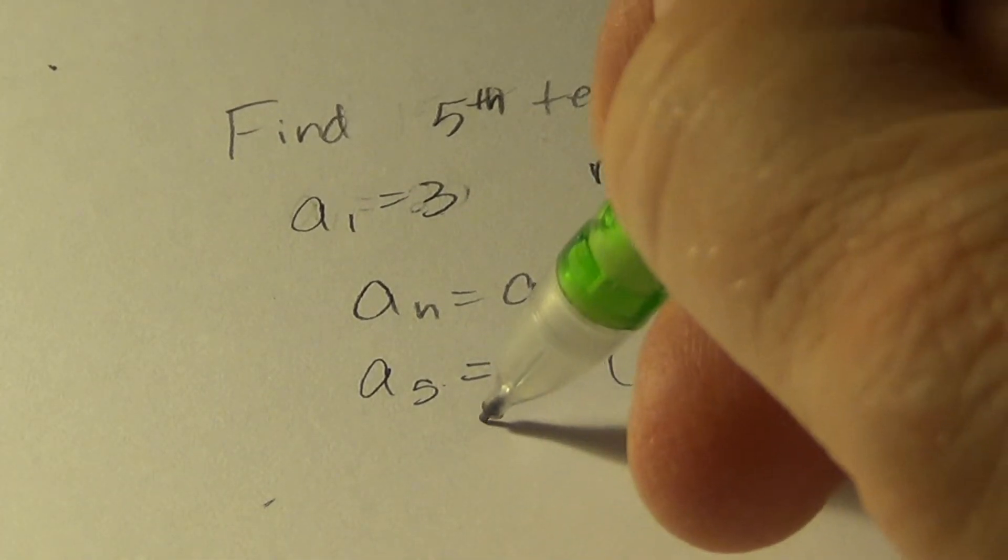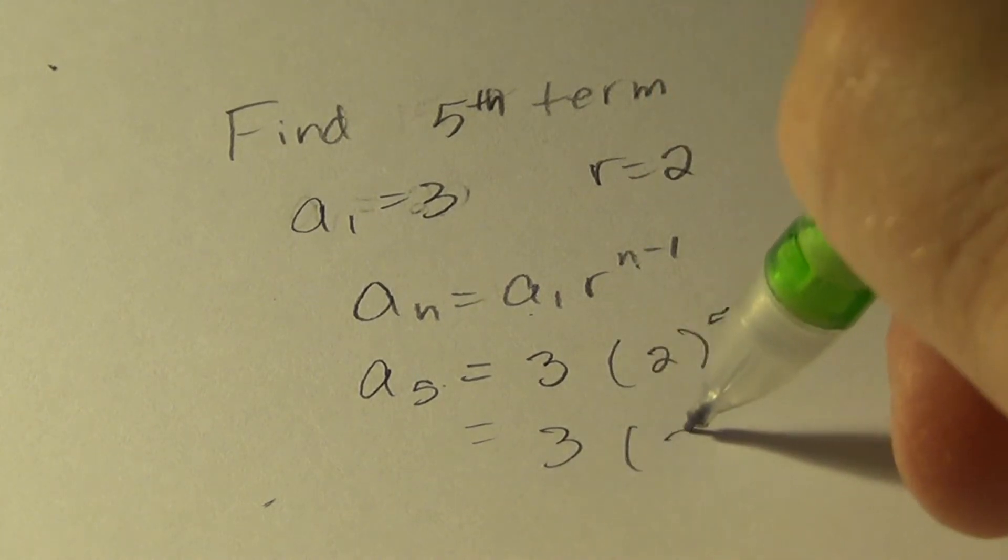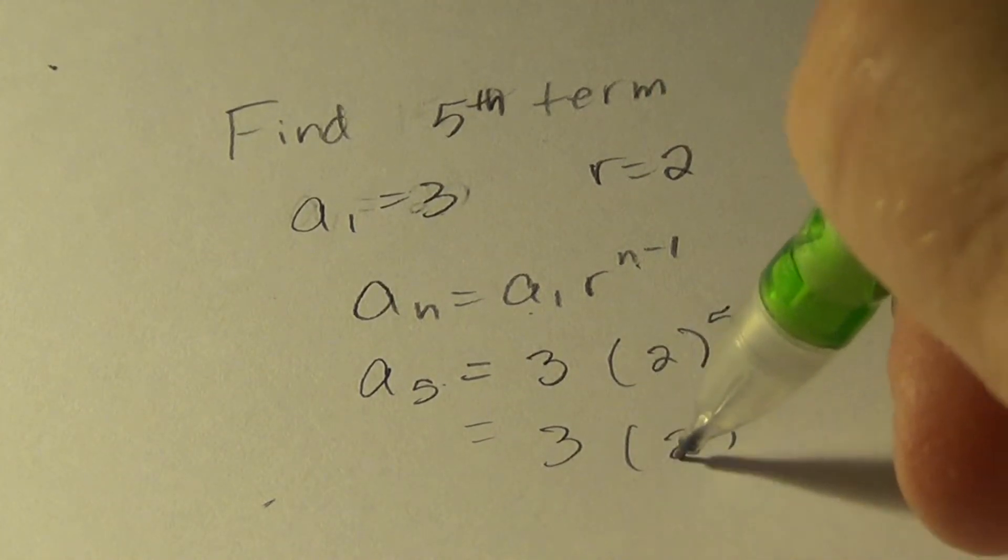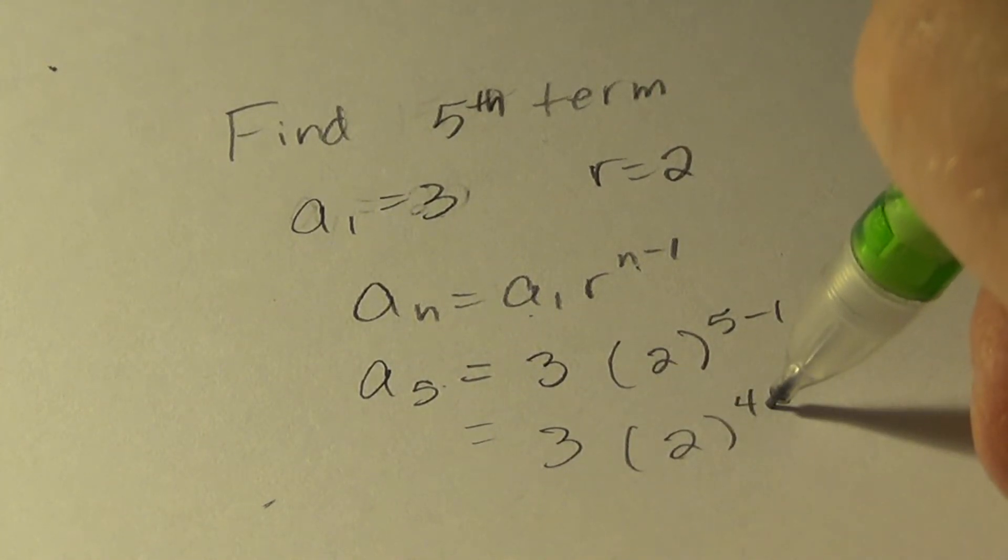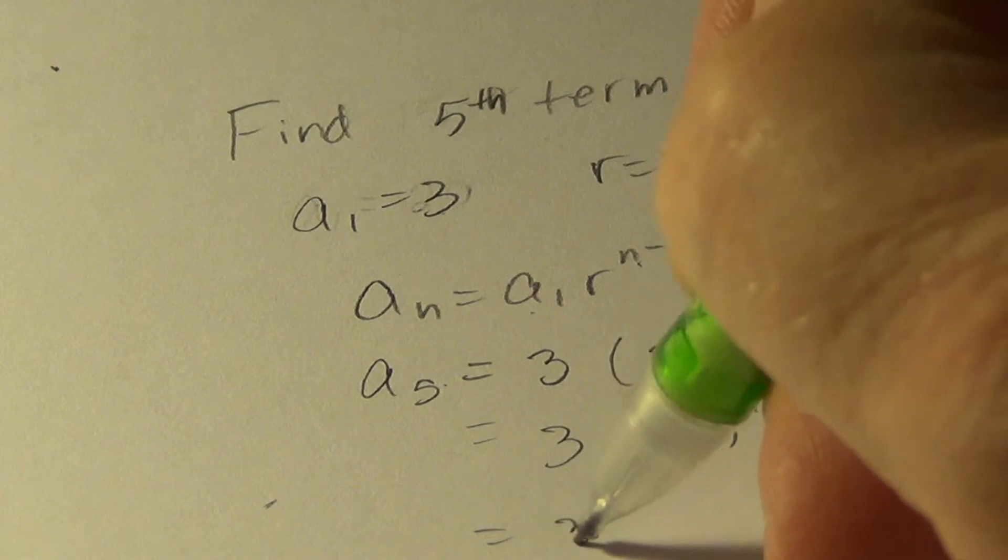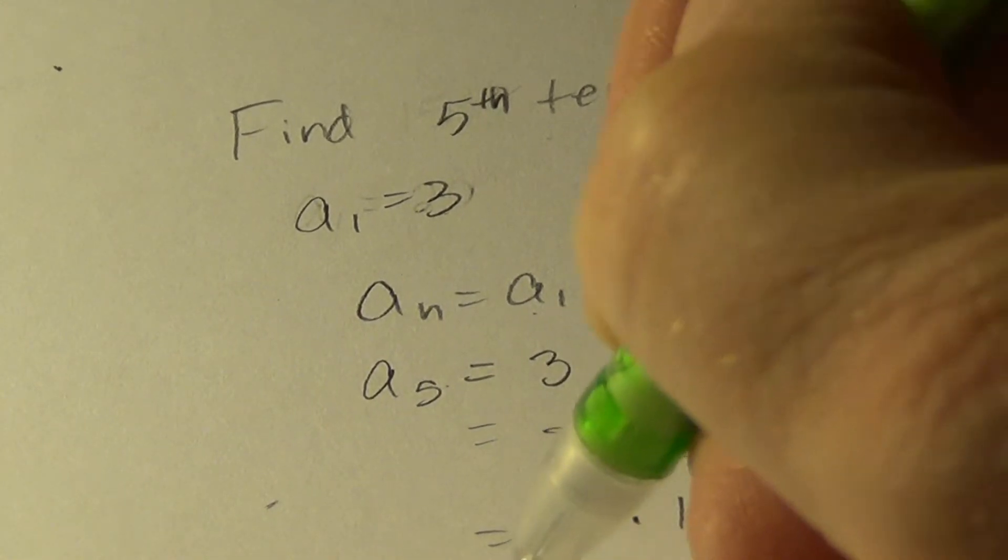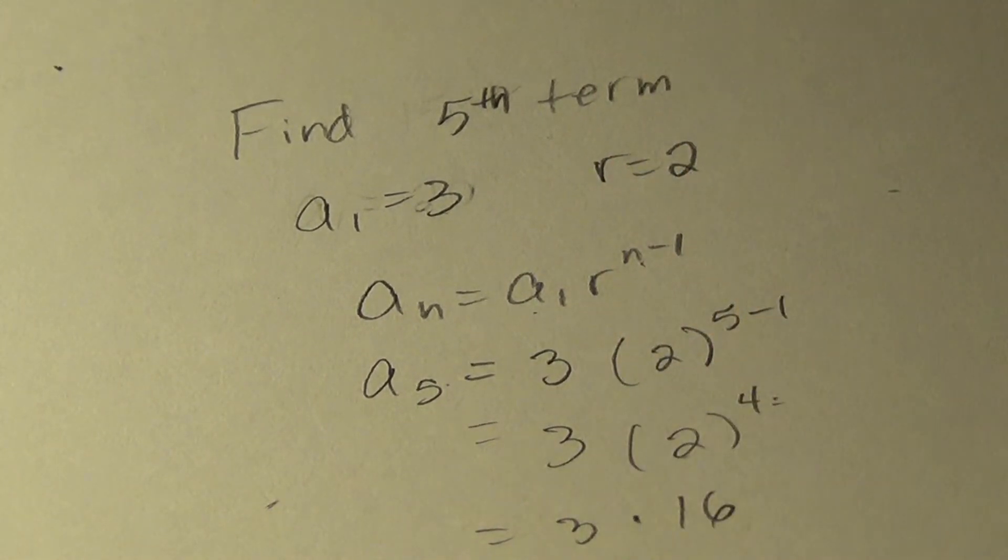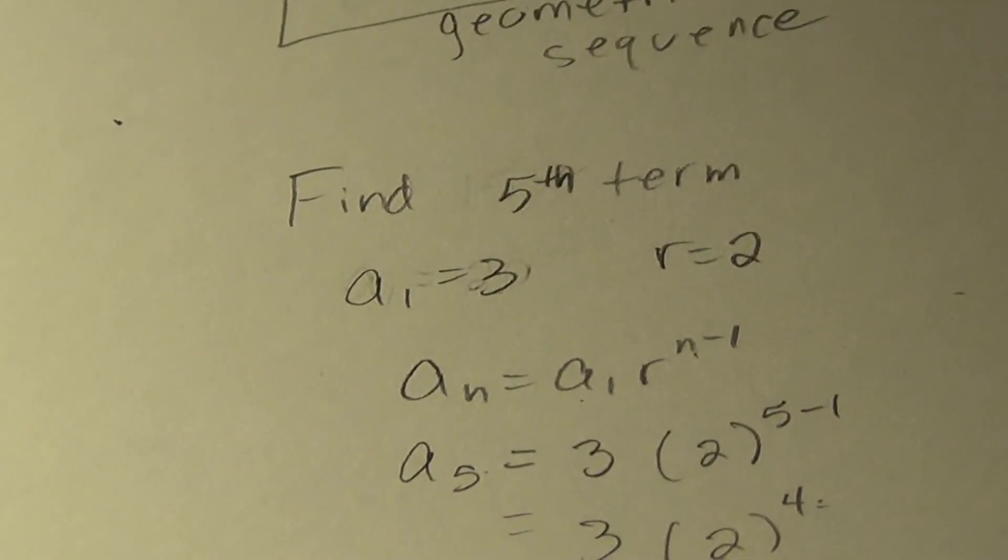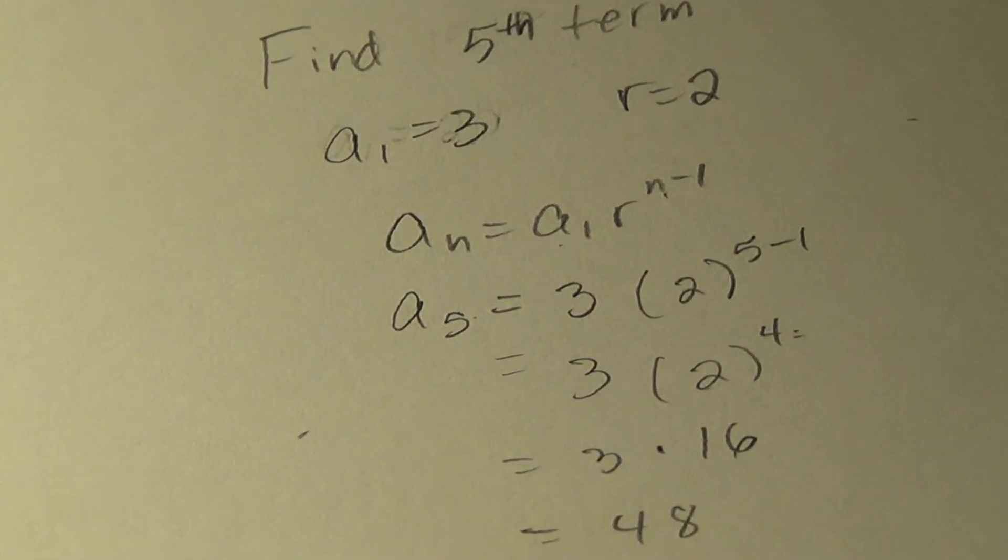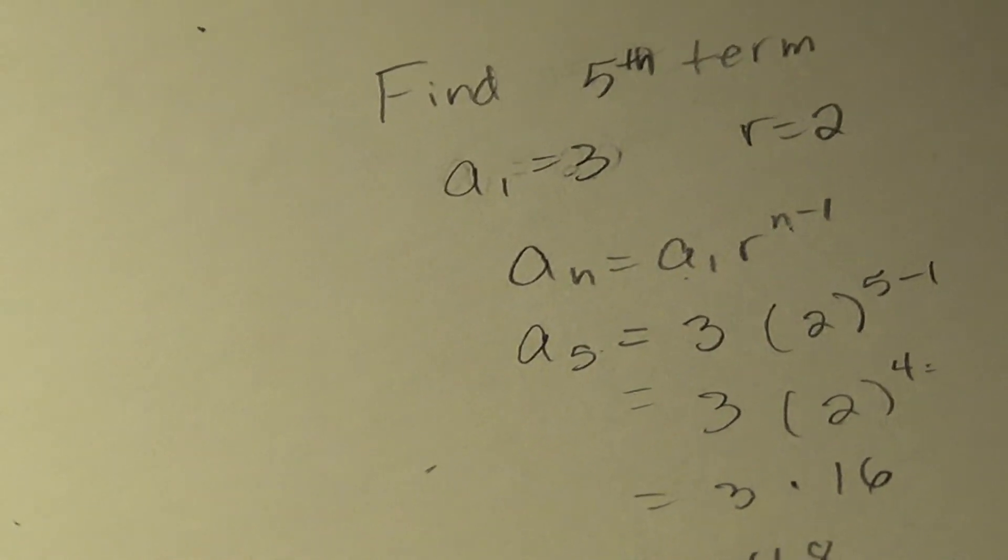So what is three times two to the fourth? We have to do the exponent first. So two times two is four, times two is eight, times two is sixteen. Three sixteens give me 48. So 48 is the fifth term of the sequence, the geometric sequence.